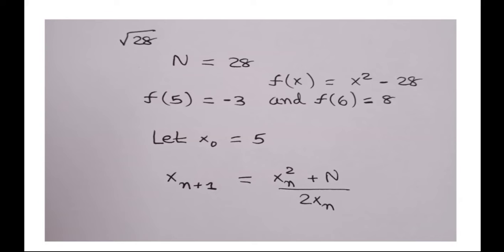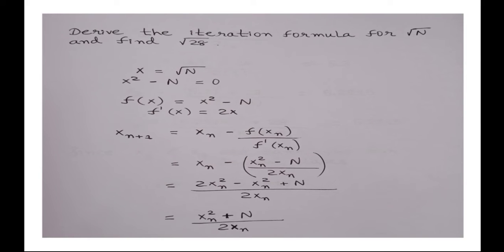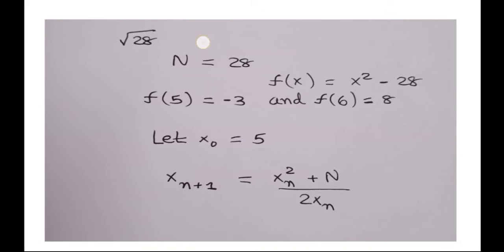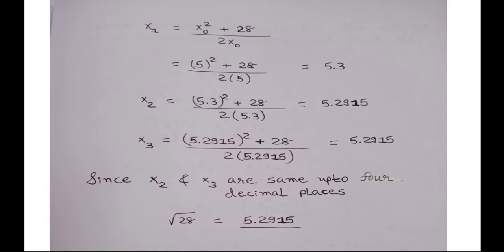Using this formula to find the square root of 28: n is equal to 28 and f of x becomes x squared minus 28. f of 5 comes out to be minus 3 and f of 6 is equal to 8. Taking x0 equal to 5 and placing in the iteration formula x(n+1) equals (x(n) squared plus 28) divided by 2x(n), the first iteration gives (5 squared plus 28) divided by 2 into 5, which comes out to 5.3. The second iteration gives (5.3 squared plus 28) divided by 2 into 5.3. From the second and third iterations, x2 and x3 are the same up to 4 decimal places, so the square root of 28 is 5.2915.